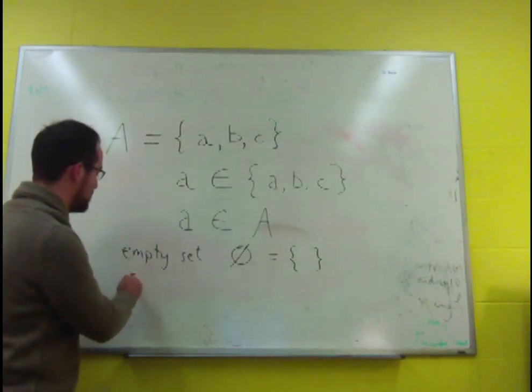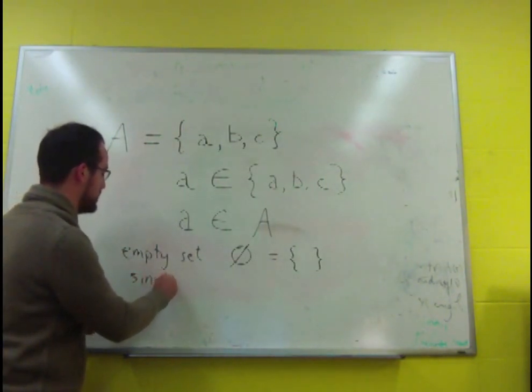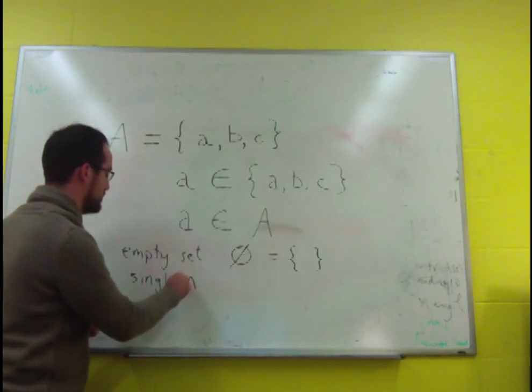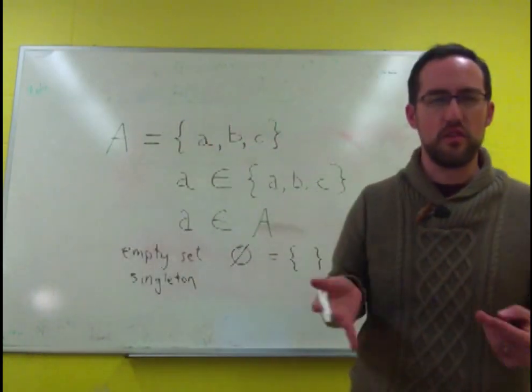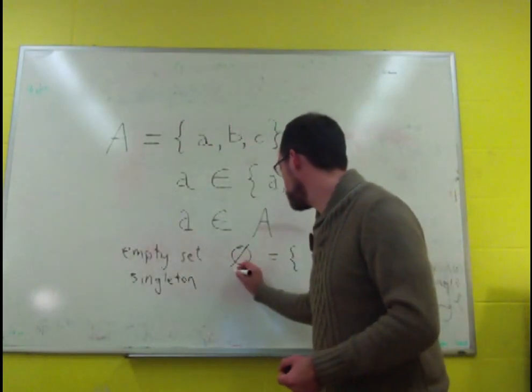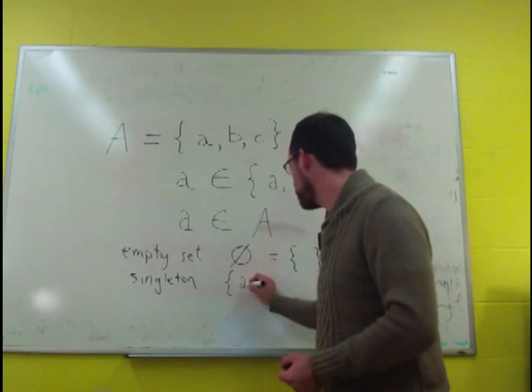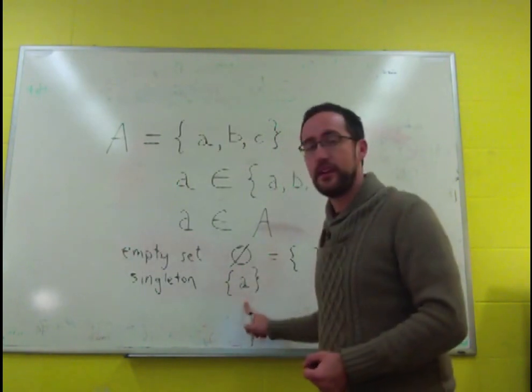A set with one member is what's known as a singleton set. And sometimes this becomes important, and it's a useful term to have. So a singleton set would be something like this. The set containing A.